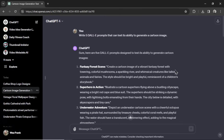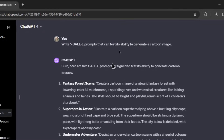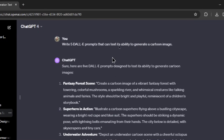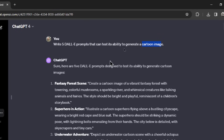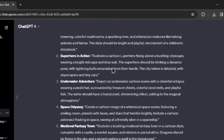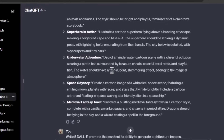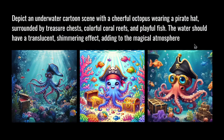To get the prompts used across all models, I wrote in ChatGPT: 'Write five DALL-E prompts that can test its ability to generate a cartoon image' — changing the category for each round. It shot out five and I picked the one that sounded the best. So in round one I chose the underwater adventure. I've hidden which model is which in the outputs, so while you're watching, guess which image is DALL-E 3, which is MidJourney version 6, and which is Stable Diffusion XL in the comments below before you see the answer.